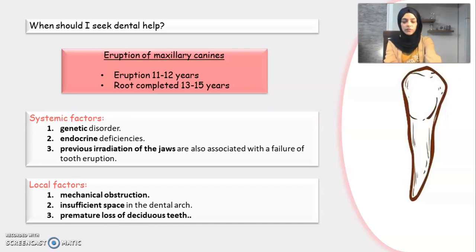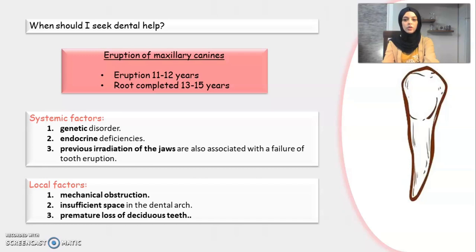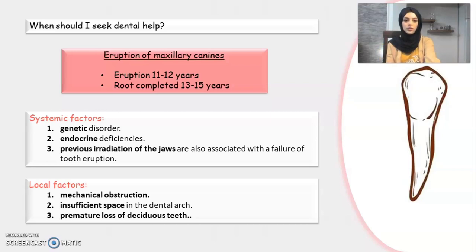There are systemic and local factors that influence impaction. Systemic factors include genetic disorders, endocrine deficiencies, and previous irradiation to the jaw, which is associated with failure of a tooth to erupt — in this case numerous teeth may be affected. Local factors include mechanical obstruction such as supernumerary teeth, a cyst or tumor, insufficient space in the dental arch, and premature loss of the deciduous canine, which serves as a guide for the eruption path of the permanent canine. Eight percent of all patients with impacted canines have bilateral impaction.